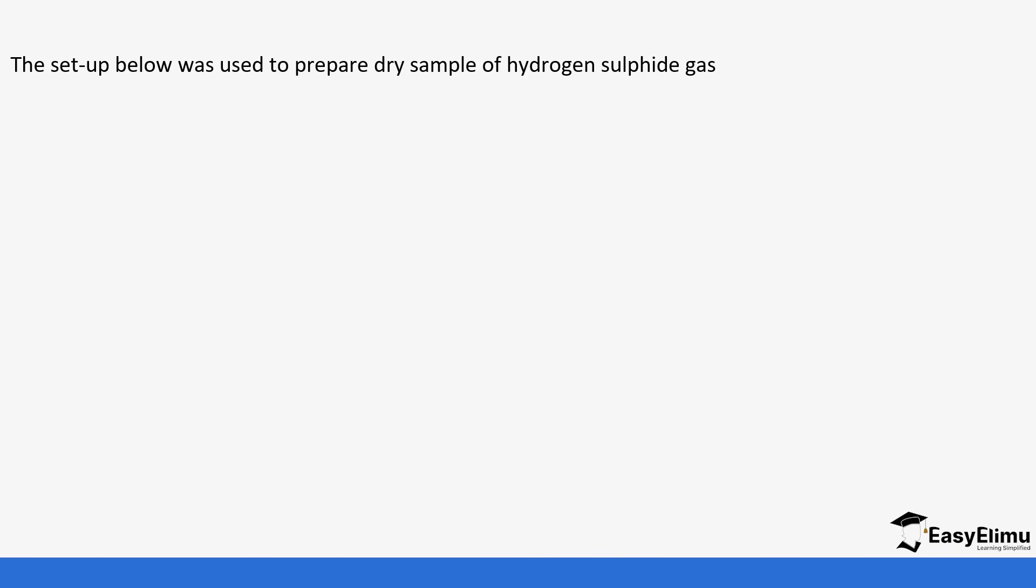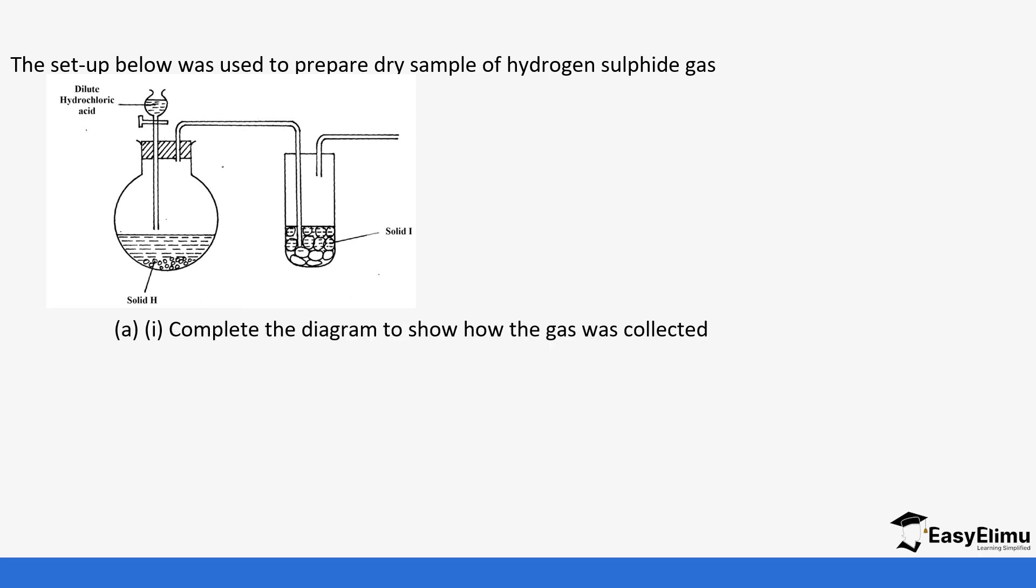Let's do this question that will help us highlight the key things we have learned about hydrogen sulfide. The setup below was used to prepare a dry sample of hydrogen sulfide gas. We have dilute hydrochloric acid with solid H, and it passes through solid I.